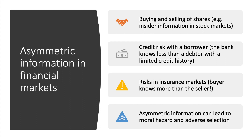Asymmetric information is an important aspect of financial economics. Information failure may affect the buyer or the seller or both parties. Asymmetric information is where one party — the buyer or the seller — has more information than another, which can distort the choices and trades that take place. For example, in stock markets, one agent may have significantly more information about the performance of a business and the likely movement of the share price. In the credit market, the bank probably knows less than the debtor about their ability to repay debt, particularly if the debtor has a limited credit history.